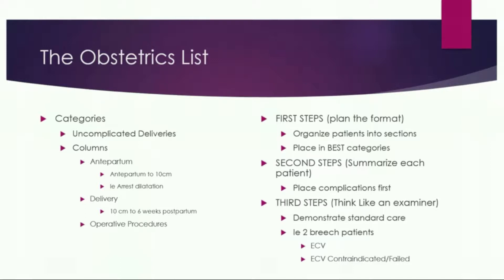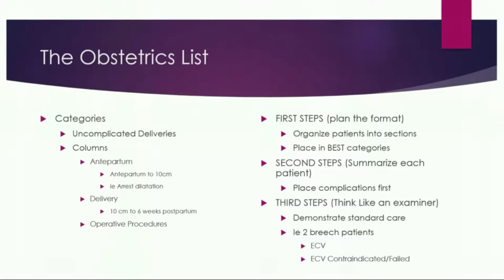That's how I like to organize it. For example, if I had someone who had an arrest of dilatation and they were 6 centimeters and I placed an IEPC and Pitocin, they had adequate contractions for 4 hours and did not change their cervix and I called a C-section — I would put that diagnosis of arrest of dilatation in the antepartum column. I often see that put in the delivery column instead. The delivery column would be something like arrest of descent, because that would happen at 10 centimeters.